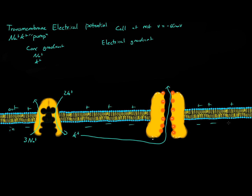Now, you have to be wondering: why is a positive ion like sodium crossing a membrane to go into a more positive area? We know that negative and positive charges want to be next to each other, so why is it leaving a negative area to go to a positive area? Well, it's actually due to the concentration gradient of potassium being greater than the electrical gradient.